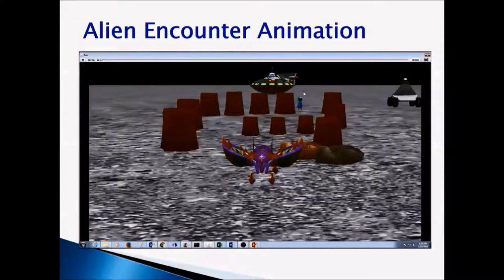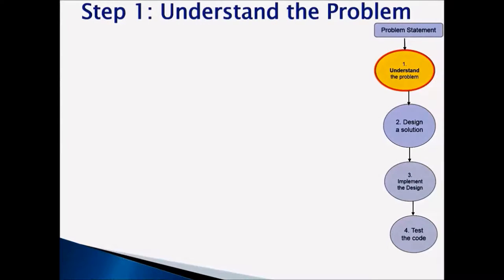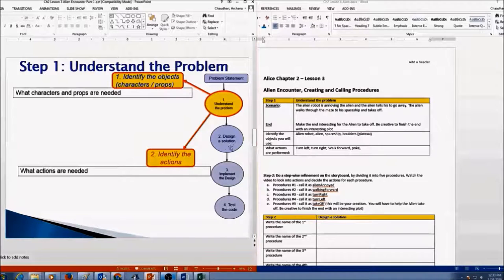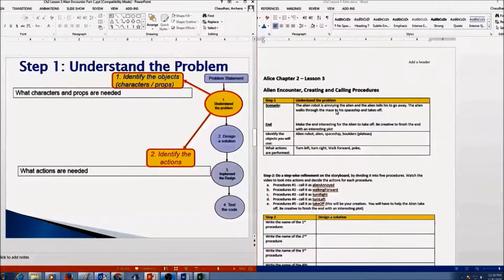The end of the story for this alien encounter animation could be your choice. You could make the alien go to the spaceship and then take off. Now let's go over your notes. Write one or two sentences that describe what this program will do, then pause the video and write a short summary. Here is my answer for Step 1: The alien robot is annoying the alien and the alien tells him to go away. The alien walks through the maze to his spaceship and then takes off.